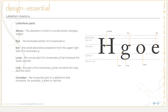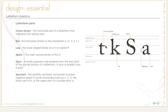A crossbar is the horizontal part of a letterform that connects, for example, the stem or hairline — so these are stems on either side of the H, and the crossbar connects these. A crossstroke is the horizontal part of a letterform that intersects the vertical part, and this is also sometimes referred to as a bar. You can find bars and crossstrokes on characters like capital A, capital H, capital T, lowercase e, lowercase f, and lowercase t.